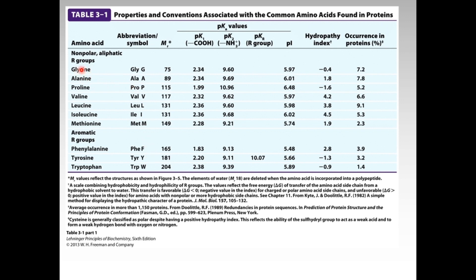These one-letter abbreviations may or may not be the starting letter of that amino acid. For example: glycine is G, alanine is A, proline is P, valine is V, leucine is L, isoleucine is I, methionine is M. Whereas phenylalanine is F — not P, because P is taken by proline. Tyrosine is Y — not T. Tryptophan is W.